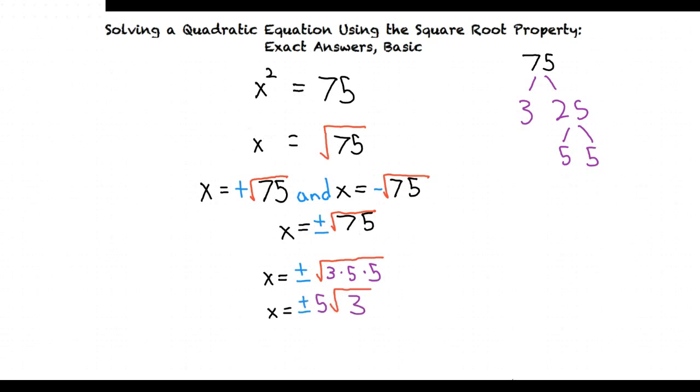So when solving a quadratic equation using the square root property, we can take the square root of both sides and we'll be left with two answers, one positive and one negative. And then if we need to, we can simplify our answer. Exactly.